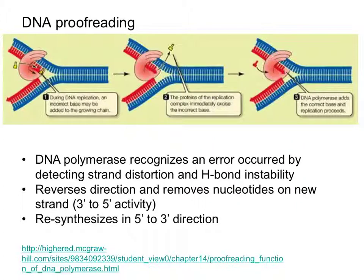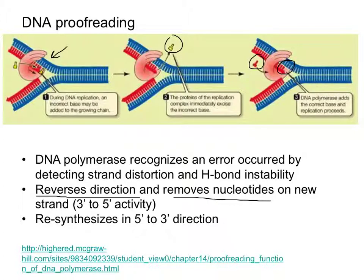This cartoon shows a DNA strand being synthesized. Template strands are shown in blue, new DNA in red — we're seeing synthesis on the leading strand. The pink donut-shaped structure is DNA polymerase. The yellow indicates an incorrect nucleotide has been added, causing a distortion in the double helix. The epsilon subunit allows the polymerase to back up, remove the incorrect nucleotide, and insert a new correct one. This is 3' to 5' exonuclease activity, followed by resynthesis in the 5' to 3' direction.